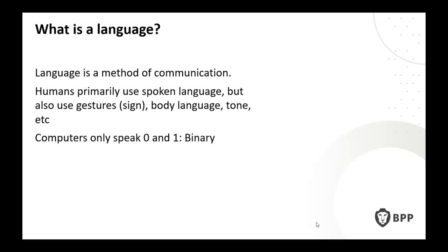Everything above binary — what we get computers to do — is interpretations, models and programs built on top of that. You being able to see me on your screen really boils down to a series of ones and zeros. Right from the start, we know human beings are capable of far more than computers, but now we see things like ChatGPT and the new advances in generative AI.